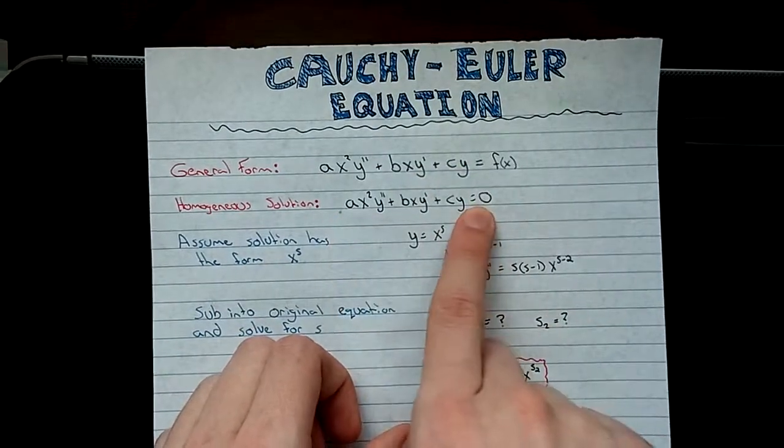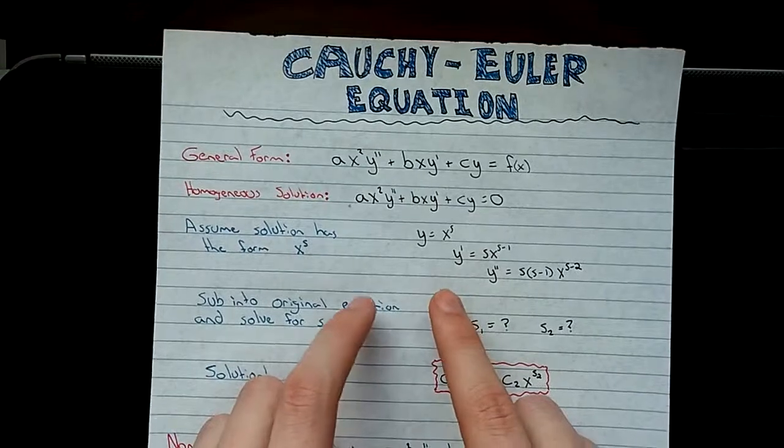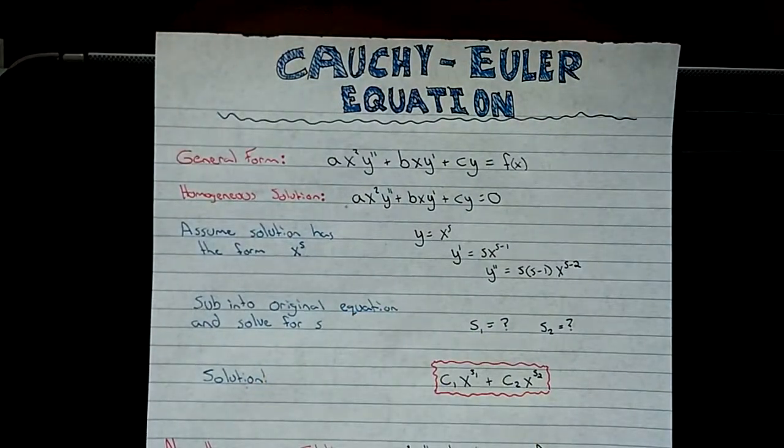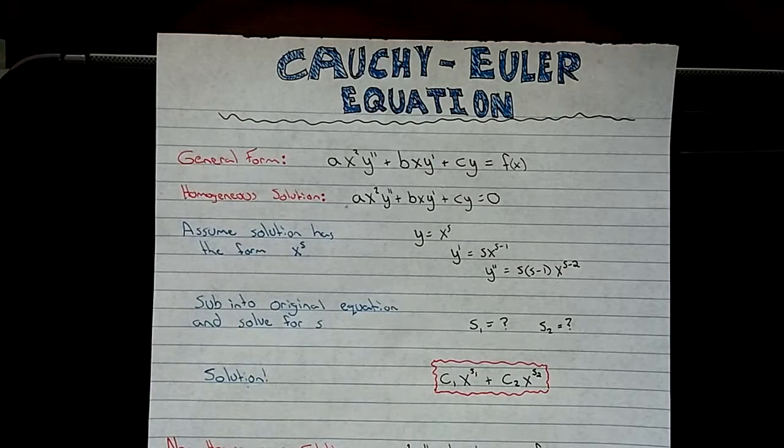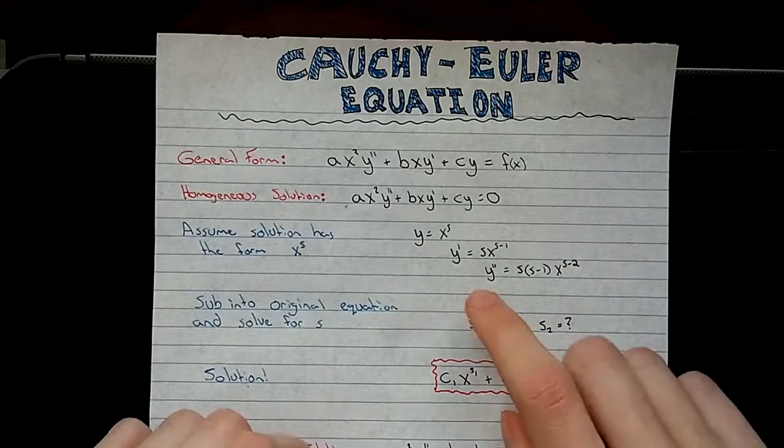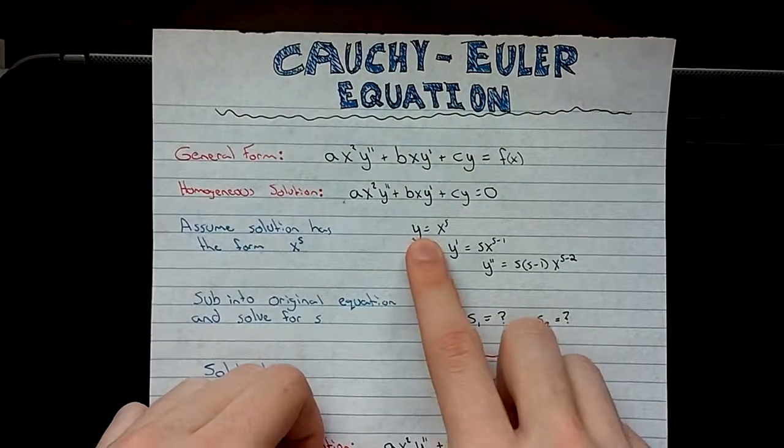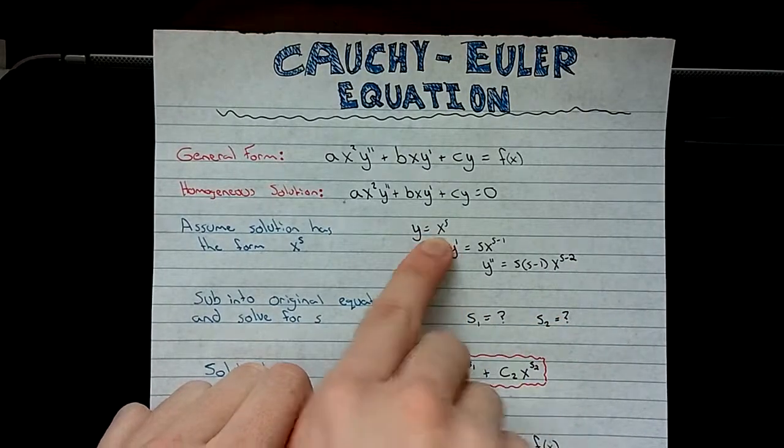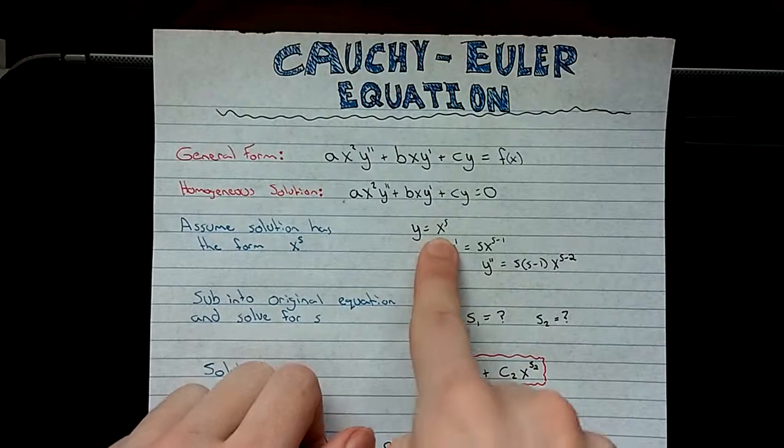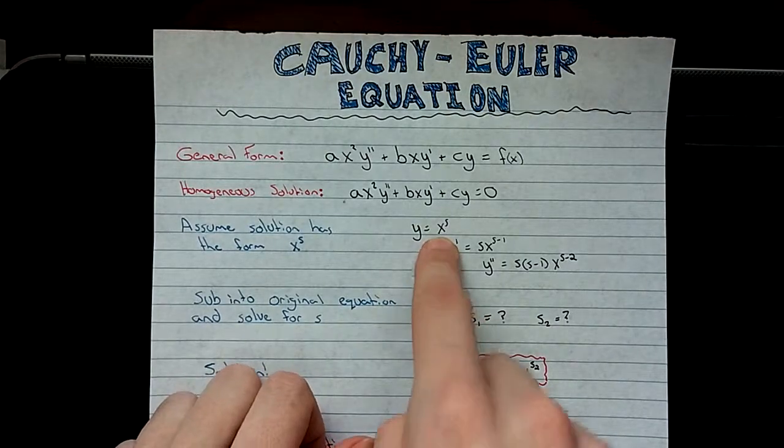So you're going to solve the homogeneous first. And to do that, it's a little bit different than what you would see in a regular equation. First thing you're going to do is assume that the solution has the form y equals x to the power of s. And the reason we do that is because it works. Just accept it.